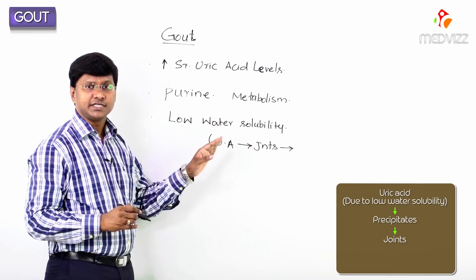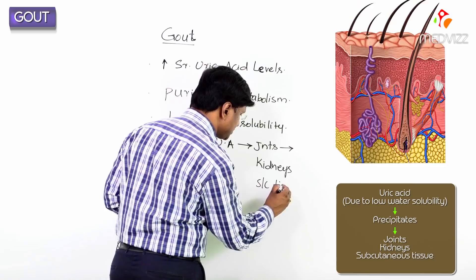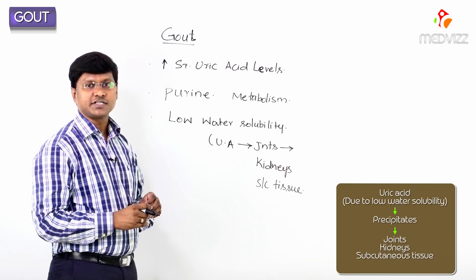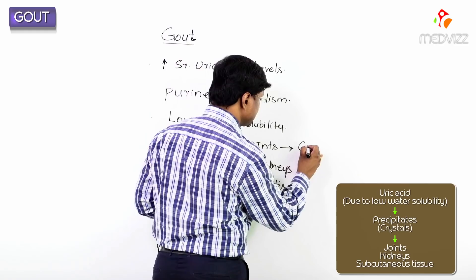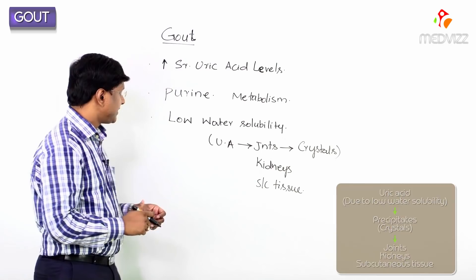It is not only precipitated in the joints — uric acid is also precipitated within the kidneys and within the subcutaneous tissue. It is precipitated in the form of crystals within the joints, kidneys, or subcutaneous tissue.